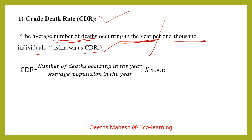But how do we calculate crude death rate? The formula is: number of deaths occurring in a year divided by average population in the year, multiplied by one thousand.